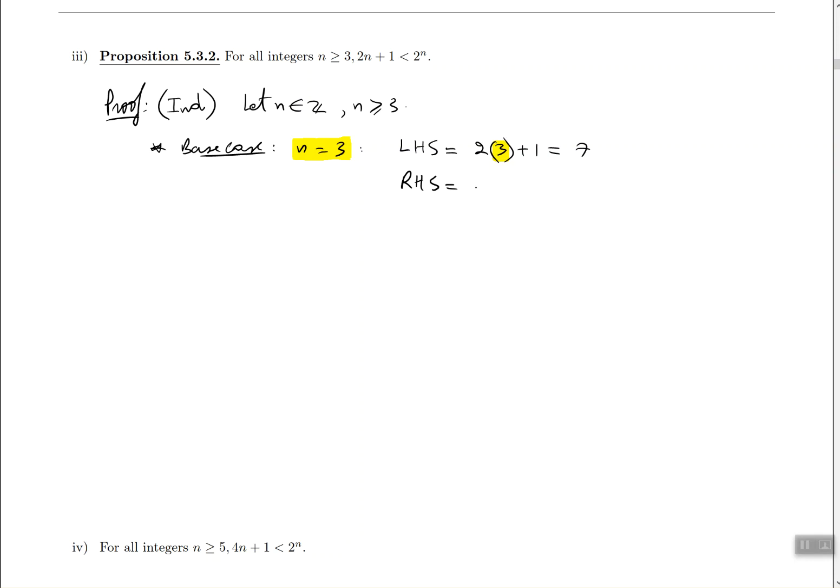So what about the right-hand side? The right-hand side is going to be 2 to the power of n, but keep in mind n is actually 3. And 2 cubed is equal to 8. And is it true that 7 is less than 8? Because we need the left-hand side to be smaller than the right-hand side. And this is in fact true. So it seems like so far the theorem is actually true.